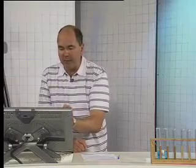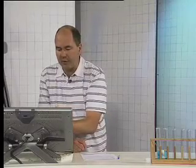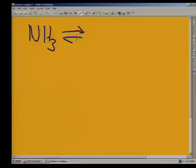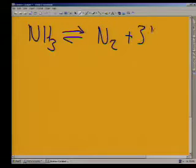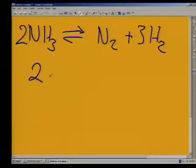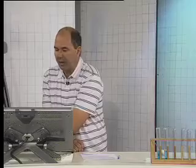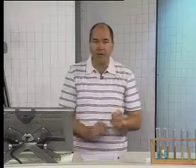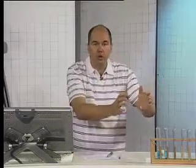I'm going to write down that same reaction. 2NH3 goes to and is in equilibrium with N2 plus 3H2. And we put a 2 in front of there. So, what this is telling me is that there's a ratio. If I have two moles of ammonia, then it will react to form one mole of nitrogen and three moles of hydrogen. Always in that same ratio. Two is to one is to three. Are you with that? Yes.